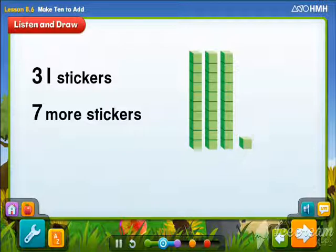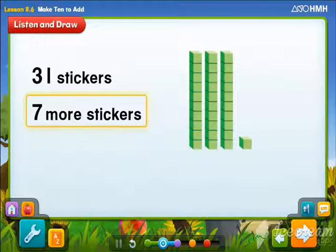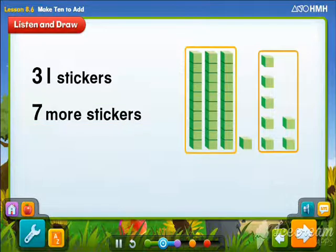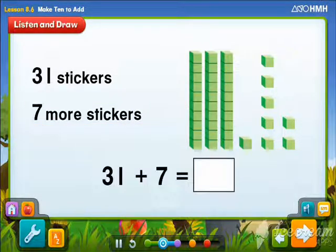Next, show 7 more stickers as 7 ones. Now, find the sum by adding the ones and tens. First, add all the ones.